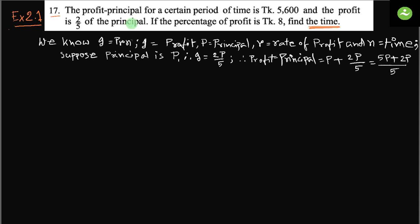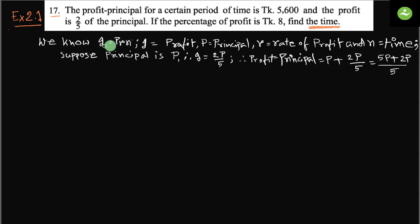Since we know the profit, we know the principal, and we also know the rate of profit — here the percentage of profit is 8%. So we know the formula: I equals P times R times N, where I equals profit, P means principal, R means rate of profit, and N means time or number of years.